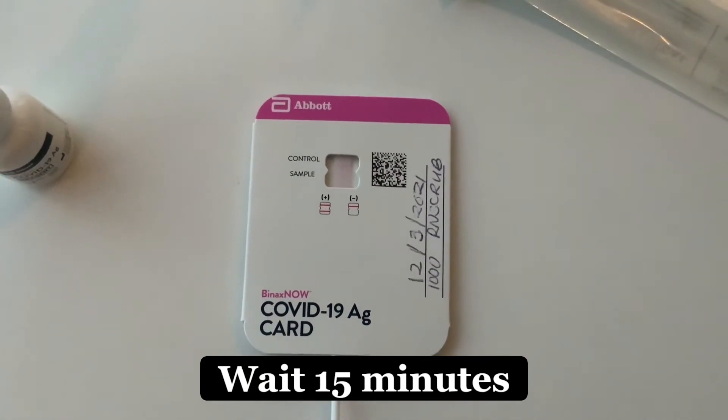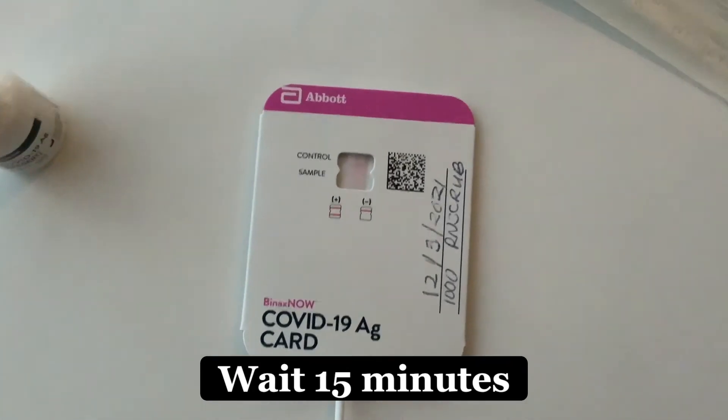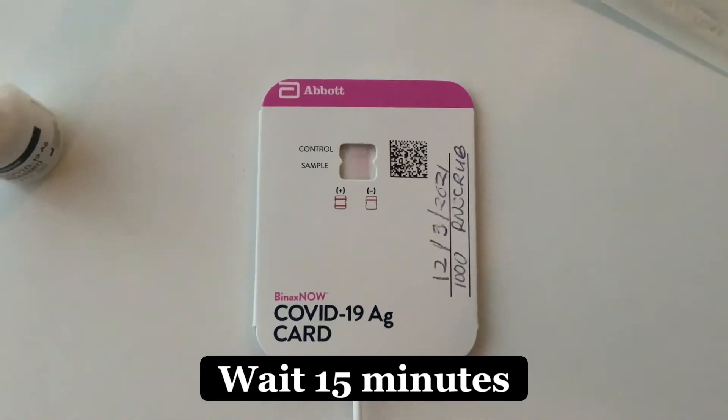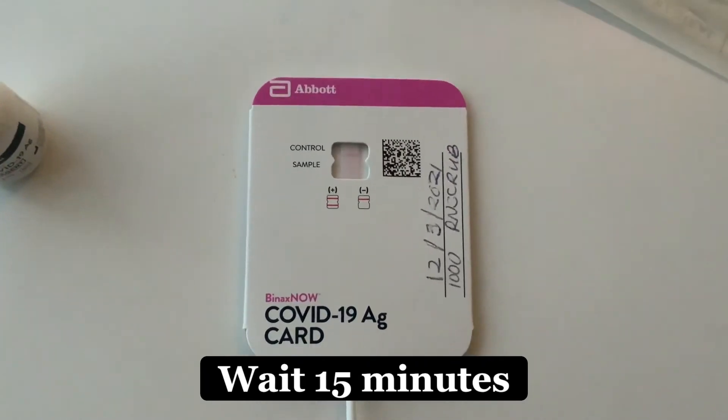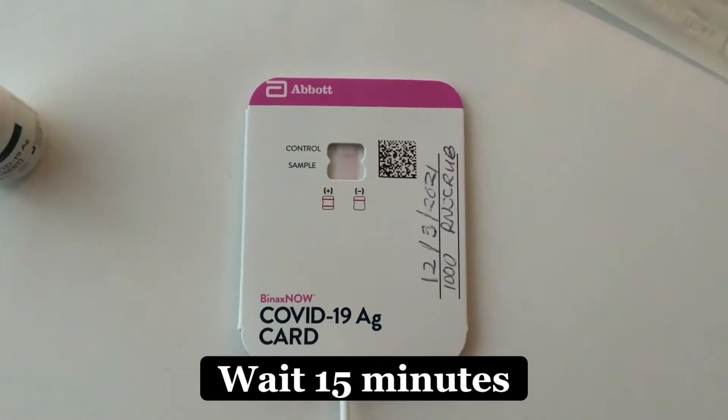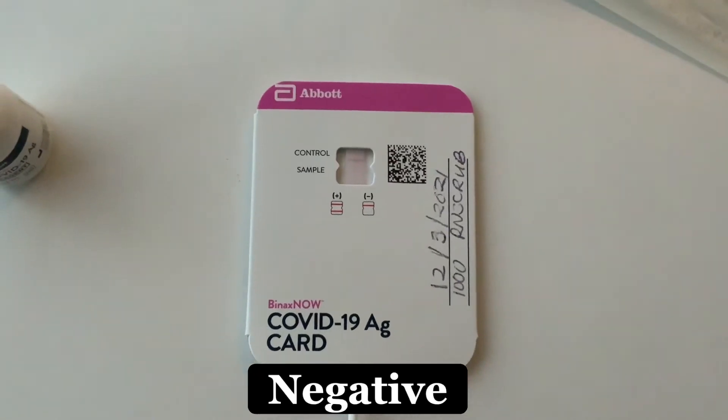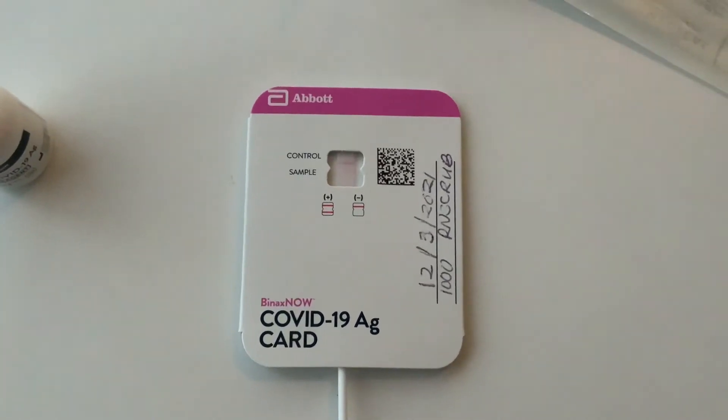And then after 15 minutes, you're either going to see a positive or a negative. So the positive is going to be two lines, and the negative is going to be one pink line straight across. And as you can see here, time-lapse, this is a negative result.